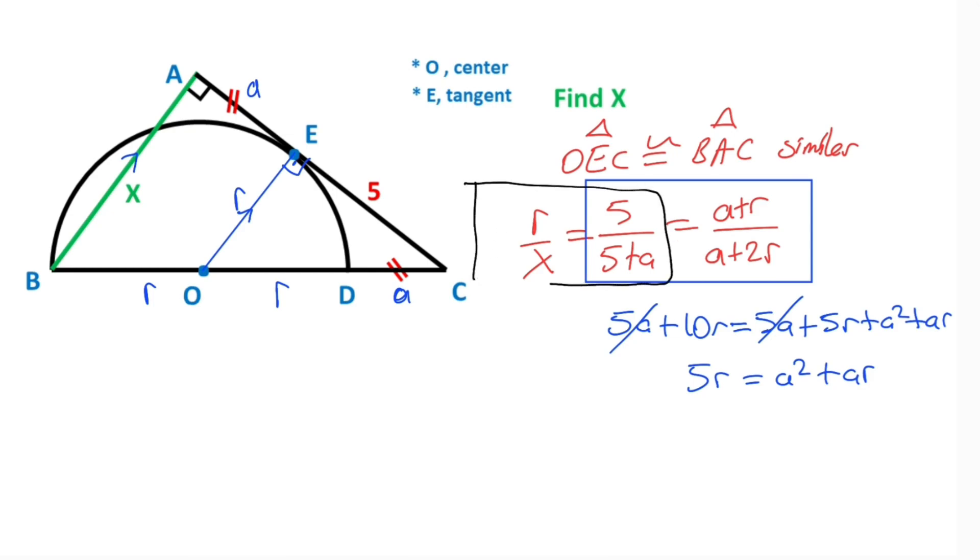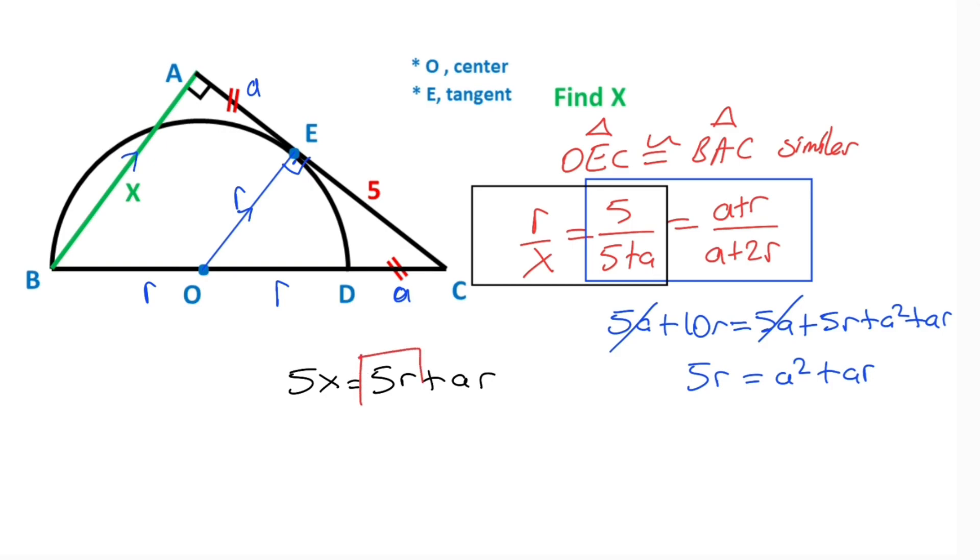Now let's use the left side of the equation. So r over x equals 5 over (5 + a). These two expressions are equal, so if you plug in a squared plus ar instead of 5r...